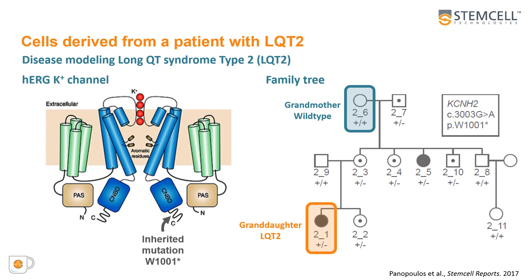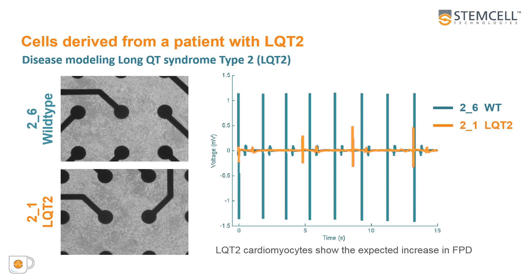Here we show images of the HPSC-derived cardiomyocytes generated from the wild type and the long QT type 2 patient-derived IPS lines on day 28 of our differentiation and replating protocol. Next to the images are the field potential signals recorded from the HPSC-derived cardiomyocytes. We can observe that the 2-6 control line has a stable and predictable excitability profile. However, 2-1, who is the carrier of the heterozygous point mutation, has a prolonged FPD and a prolonged beat period.